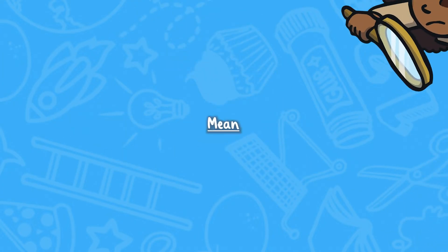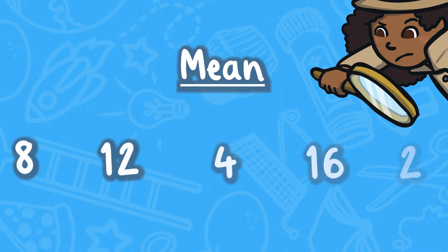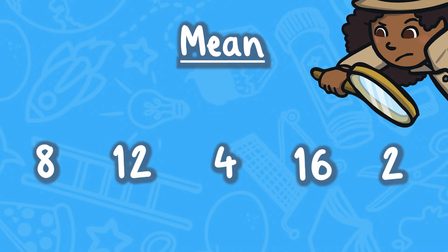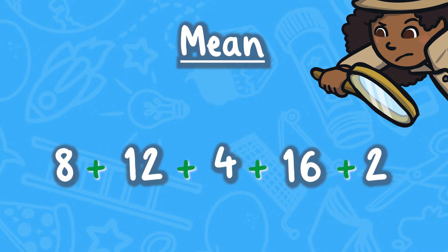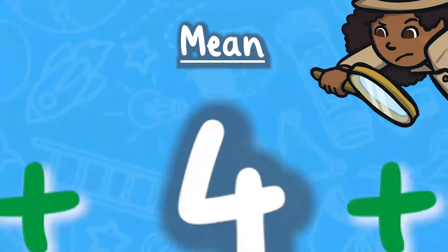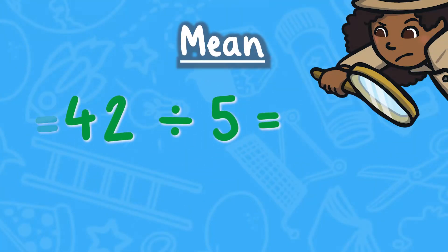To find the mean of a set of numbers, add all of the numbers together, then divide by the amount of numbers there are.